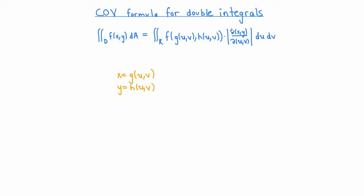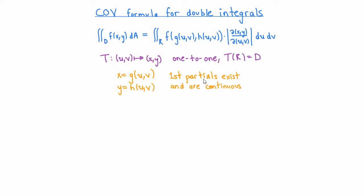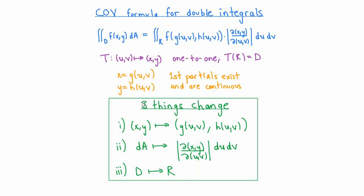I'll explain what the determinant of the Jacobian is as we go along. Writing T for the transformation that takes points in uv coordinates to points in xy coordinates, in order for this formula to be valid we assume T is one-to-one, that it maps region R onto region D, and that the first partial derivatives of g and h exist and are continuous — for the same reasons as the analogous assumptions in the one-variable case. Just as in the one-variable case, there are three things that change: first, xy gets replaced by new functions of u and v; second, the differential dA (or dx dy) gets replaced by a new differential involving the Jacobian determinant; and third, the region D gets replaced by the new region R.